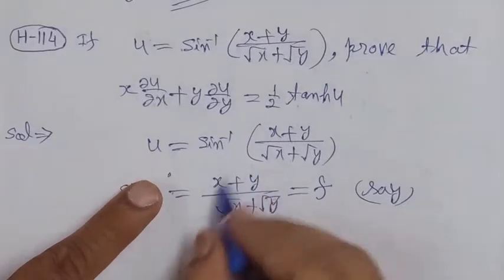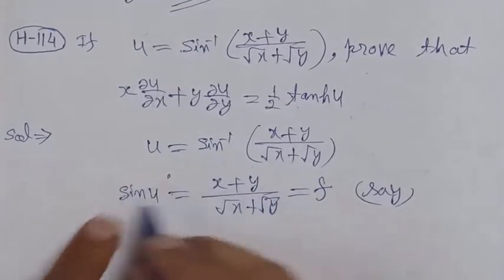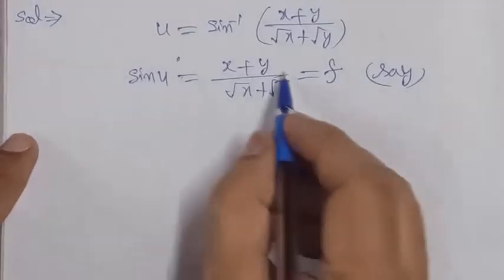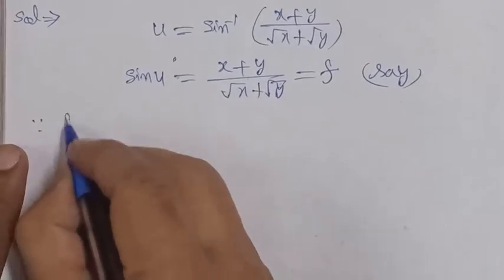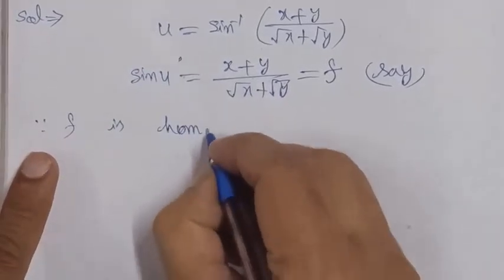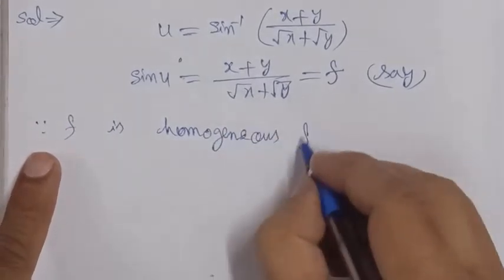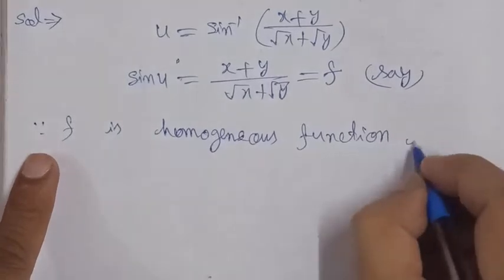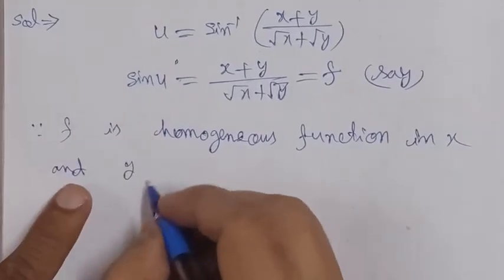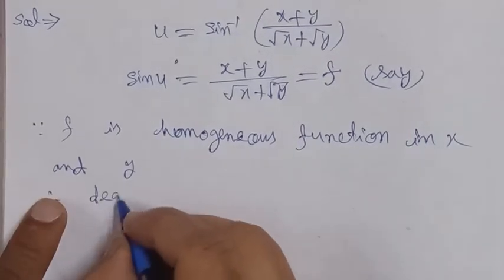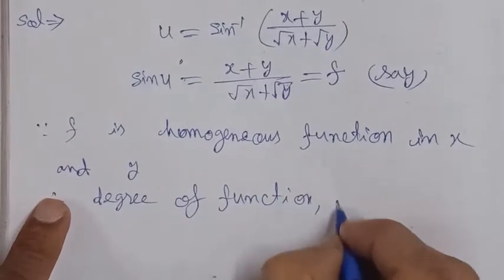We will use the degree of the function and apply Euler's theorem. Since f is a homogeneous function in x and y, therefore the degree of function, denoted by n, is 1 minus 1 by 2 which equals 1 by 2.